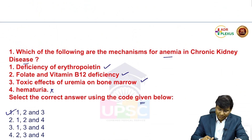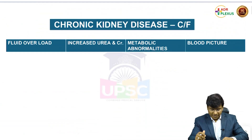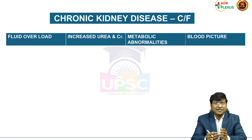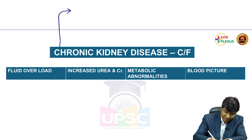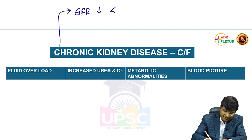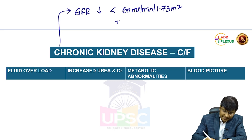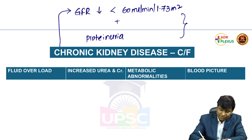In chronic kidney disease, the parameters for definition are two important ones. First is GFR — the glomerular filtration rate — which will be reduced to less than 60 ml per minute per 1.73 m². Along with that, these patients will also have proteinuria. This decrease in GFR and proteinuria should be present for more than three months to call it chronic kidney disease.